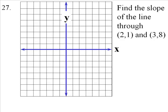Number 27, find the slope through the ordered pairs 2 comma 1 and 3 comma 8. Now 2 comma 1 means you're going 2 to the right and you're going up 1. So that's the point 2 comma 1.